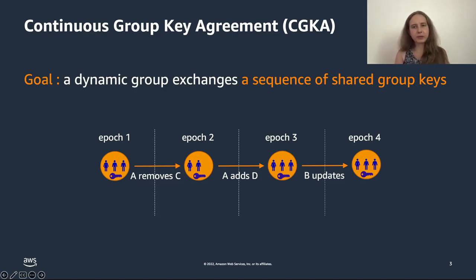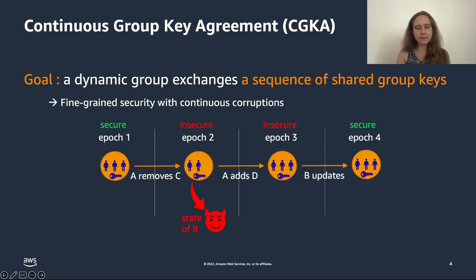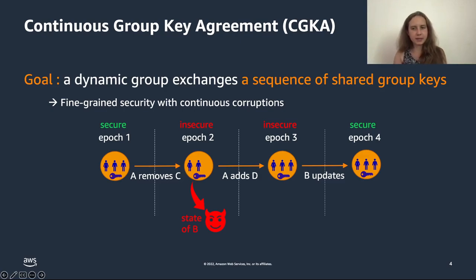One special thing about CGKA and group communication in general is that it should be secure in the presence of continuous state corruptions, and we want fine-grained security in this setting. For instance, if the state of a party — let's say Bob — leaks in epoch 2, this makes some epochs inherently insecure: epochs 2 and 3 in this case. But past epochs, in this case epoch 1, are secure — a property sometimes called forward secrecy. And then afterwards, when Bob refreshes his secrets, this restores security in epoch 4, which is sometimes called post-compromise security. Fine-grained security means that some epochs are secure even when someone is corrupted in some other epoch.